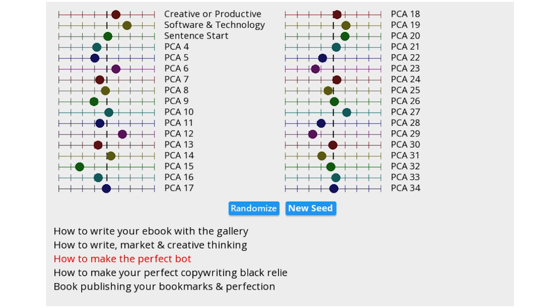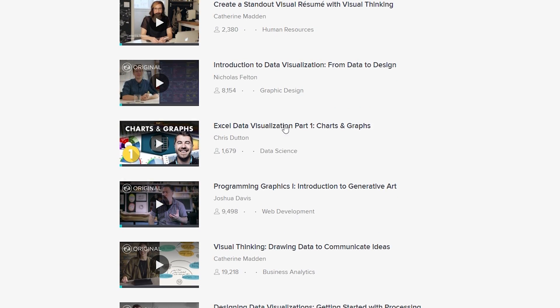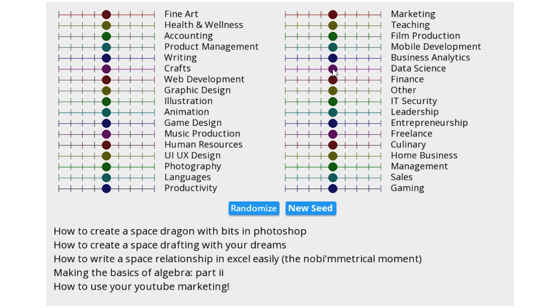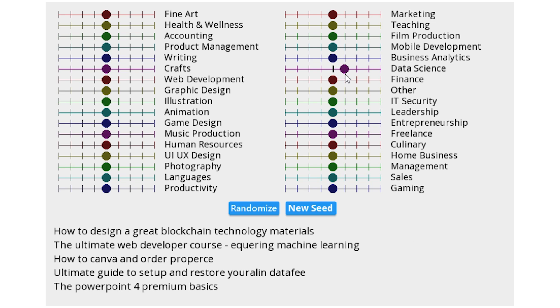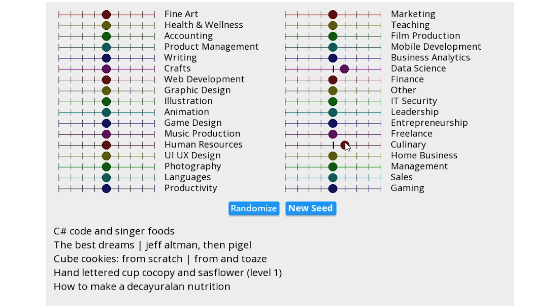I also want to mention that PCA wasn't strictly necessary, because Skillshare already categorizes the classes into 34 different categories. The results were much better within each category, but since each original class only had one category, mixing them doesn't really work well.